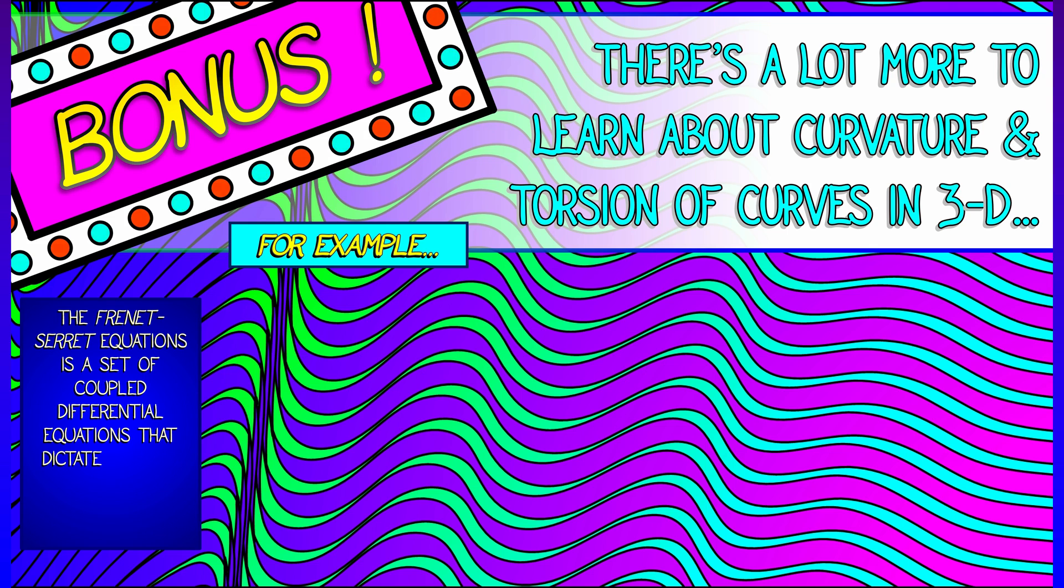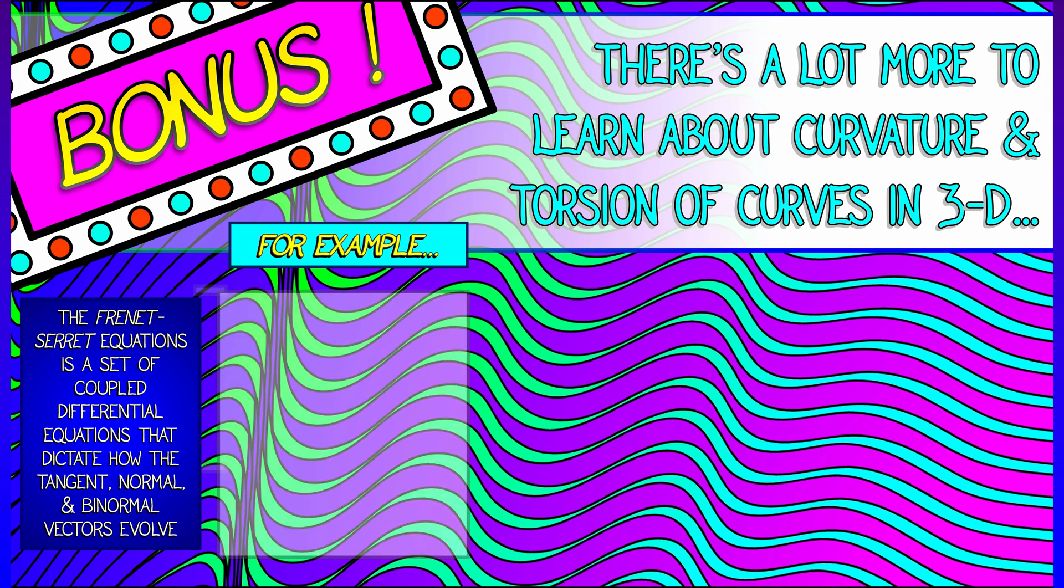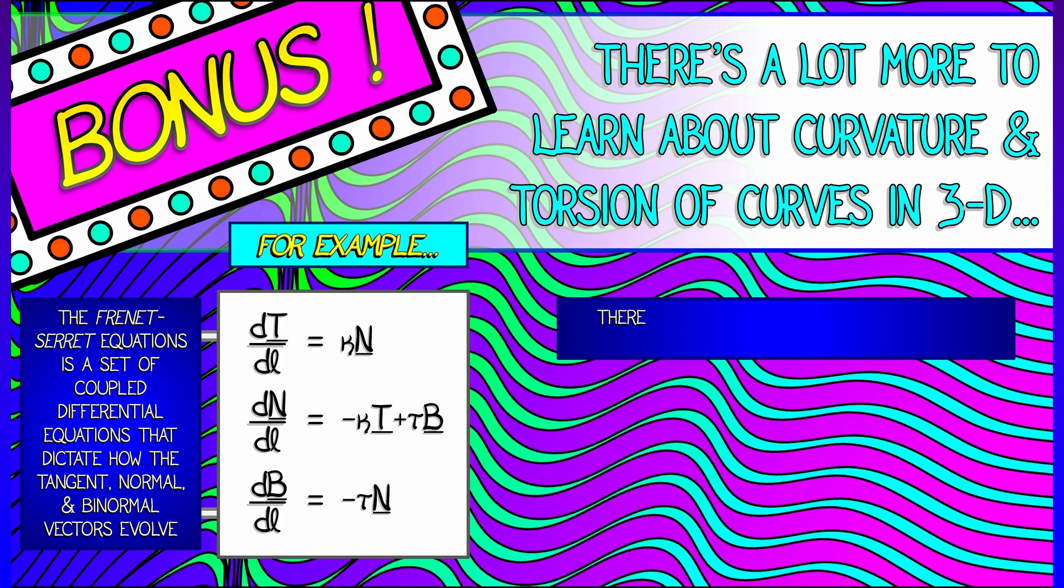In this subject, for example, there is a beautiful and compact set of differential equations that tell you exactly how the unit tangent, the unit normal, and the unit binormal vectors evolve. These so-called Frenet-Serret equations are very beautiful, very compact. They're all expressed in terms of the curvature and the torsion, and that tells you a lot about how important those coefficients are.